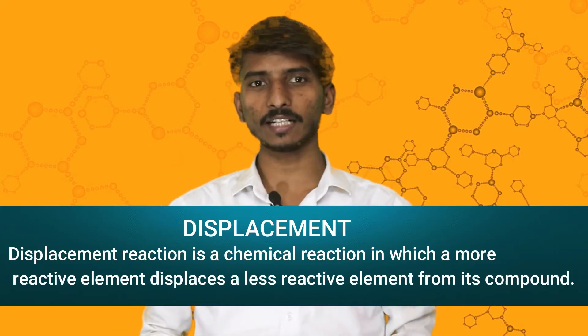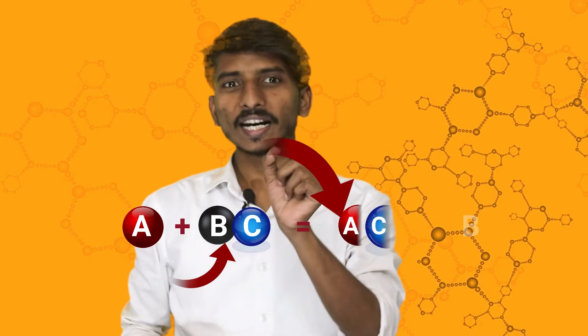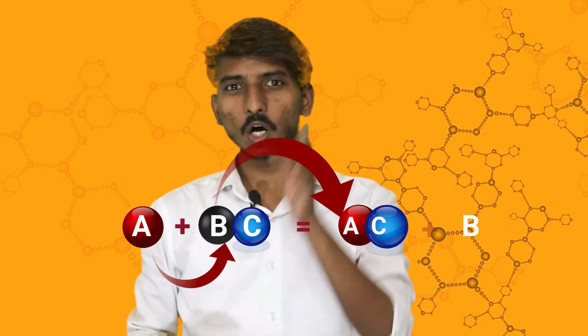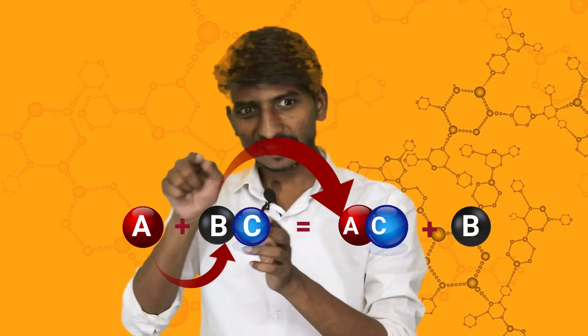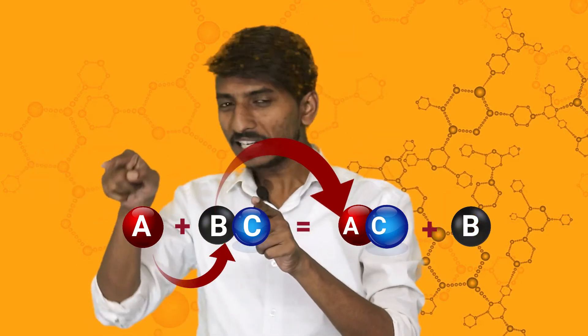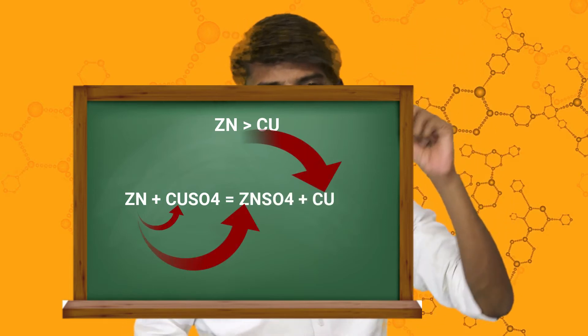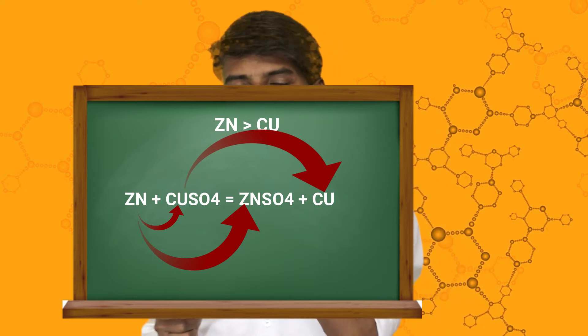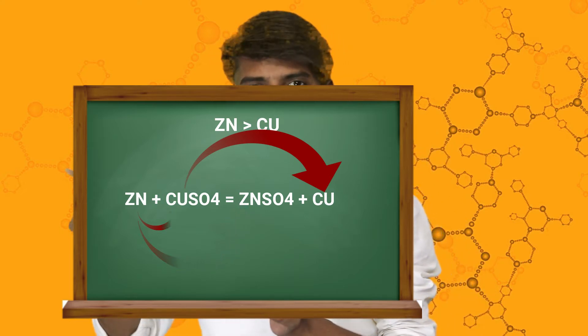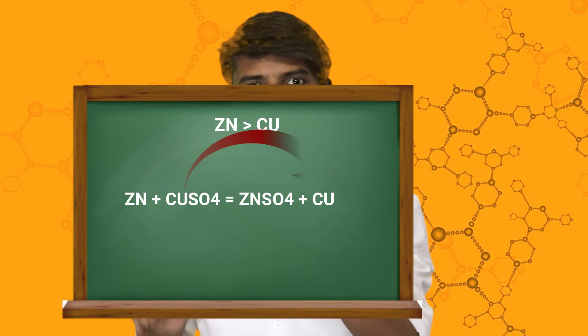In a displacement reaction, a highly reactive element displaces a less reactive element from its compound. The structure is: A reacts with BC, where A is highly reactive, so A displaces B to form AC plus B as the product. For example, Zn plus CuSO4 — zinc is more reactive and displaces copper, so the product is ZnSO4 plus Cu. This means Cu is displaced by Zn.